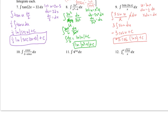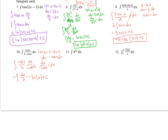Number 10: the integral of cosine x over (2 minus sine x). Let u equal 2 minus sine x; then du equals negative cosine x dx, so dx equals du over negative cosine x. Substituting: the integral of cos x over u times du over negative cosine x — those cancel, giving negative integral of du over u. This equals negative ln|u| plus C. Resubstituting: negative ln|2 minus sine x| plus C.